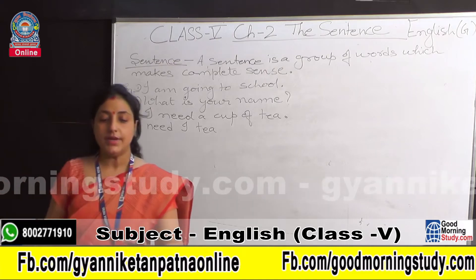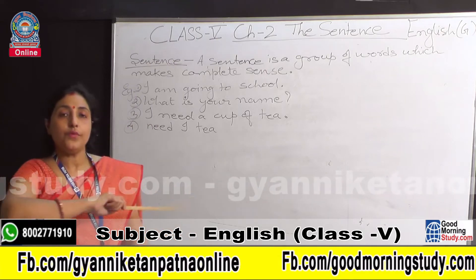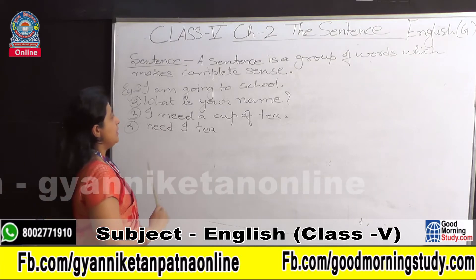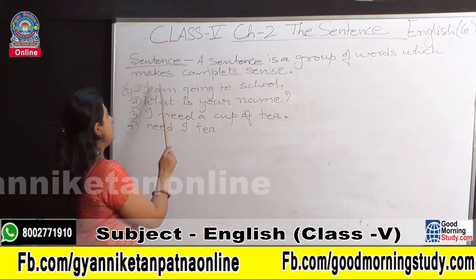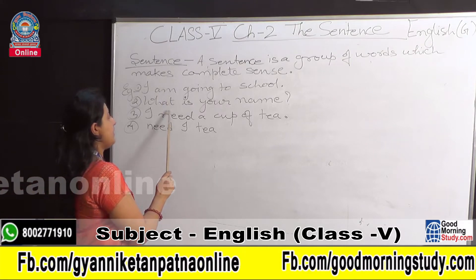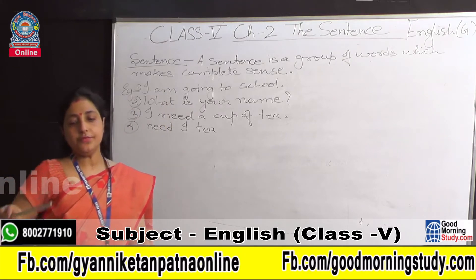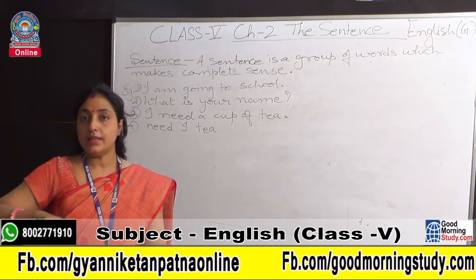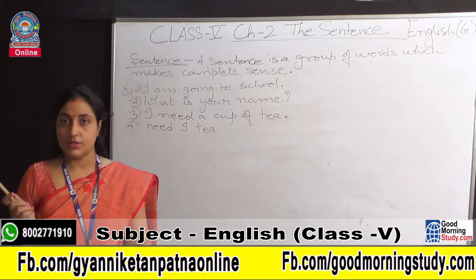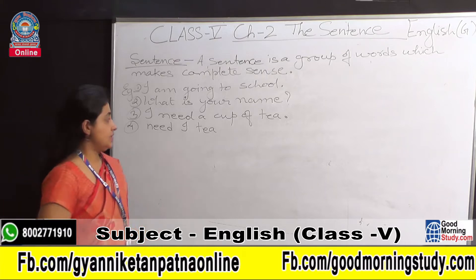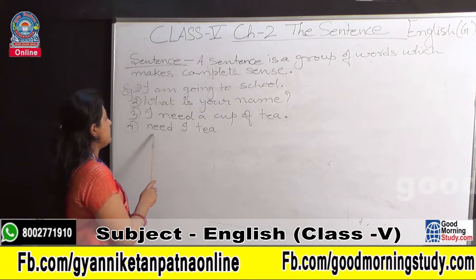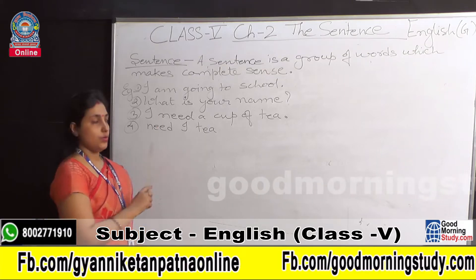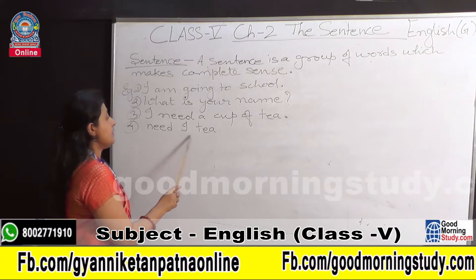So my dear students, of all these 4 groups of words, the first 3 — numbers 1, 2, and 3 — are sentences. But the last one is not a sentence because it does not give us any sense.